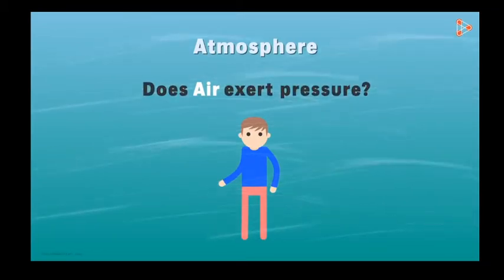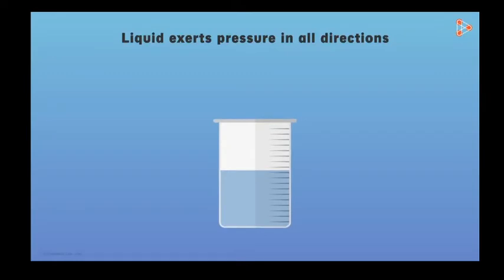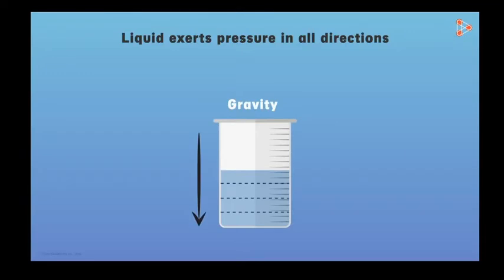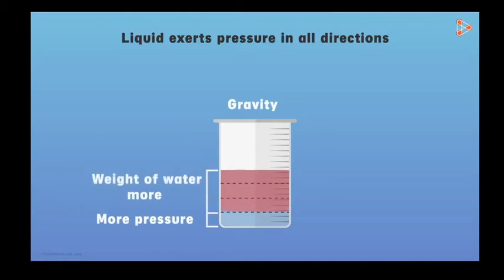Does air also exert pressure on objects on the earth? In our previous video, we studied that liquid exerts pressure in all directions. For example, water in a beaker is pulled down by gravity. If we divide the water into different layers, each layer is pulled down by the earth. Due to this pull, water exerts downward pressure, and this pressure is uneven — the bottom layer experiences more pressure than the top layer.